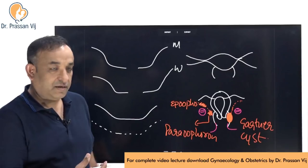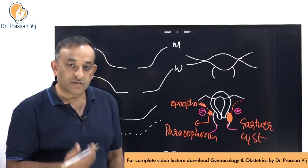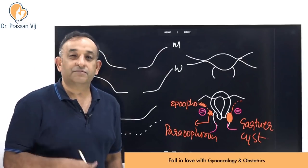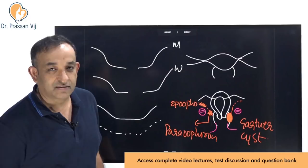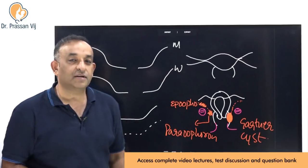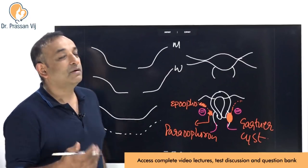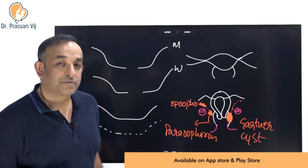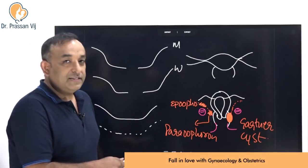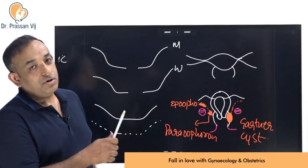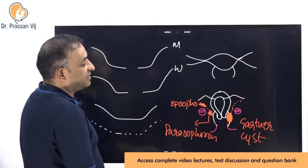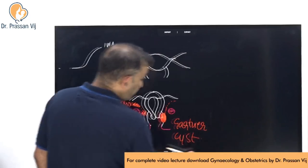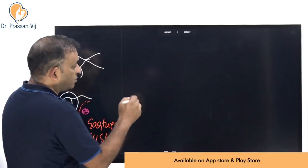The Wolffian duct is also known as the mesonephric duct and also as the Gartner's duct — all synonyms. So Gartner's cyst is simply a remnant of the Gartner's duct, which is the mesonephric or Wolffian duct. This Gartner's cyst is an asymptomatic cyst present ever since the girl is born, but mostly it remains asymptomatic.